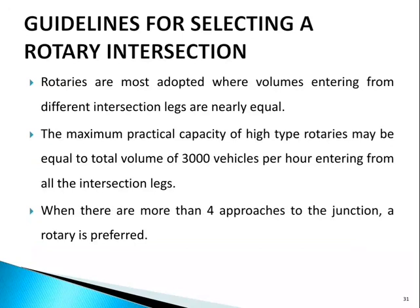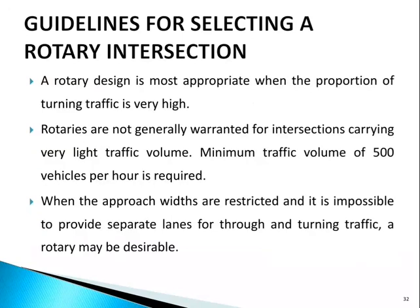Guidelines for selecting a rotary intersection: rotaries are most suitable where volumes from different legs are nearly equal; maximum practical capacity is about 3000 vehicles per hour total; when there are more than four approaches, a rotary is preferred; it is most appropriate when the proportion of turning traffic is very high; rotaries are not warranted for very light traffic; a minimum of 500 vehicles per hour is required; and a rotary may be desirable when approach widths are restricted.